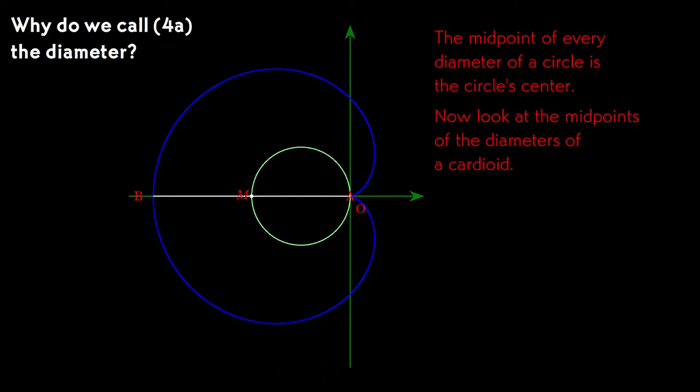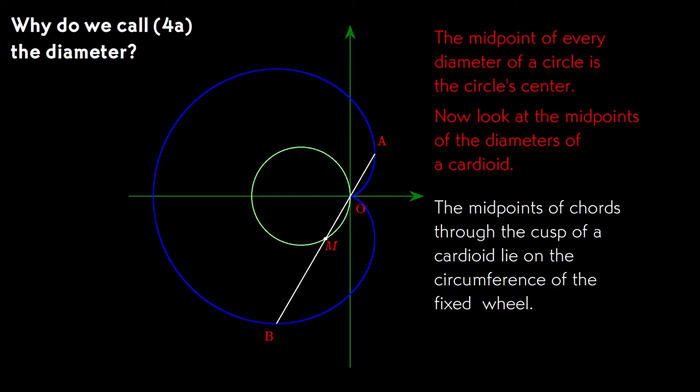There's also an interesting fact about the midpoints of the diameters of a cardioid. They are all on the circumference of the fixed wheel that we started with, in comparison with the midpoints of a circle's diameters, which are all on the circle center. This observation about the midpoints of the chords is not terribly difficult to prove, and I'm going to skip over the proof.